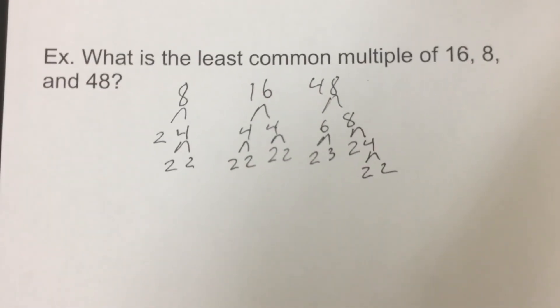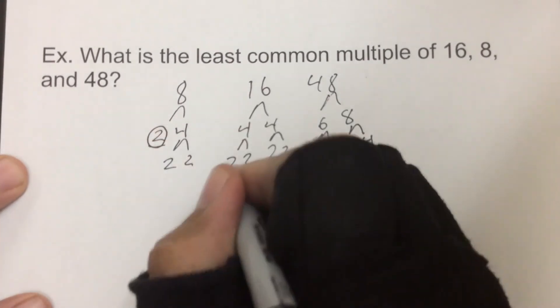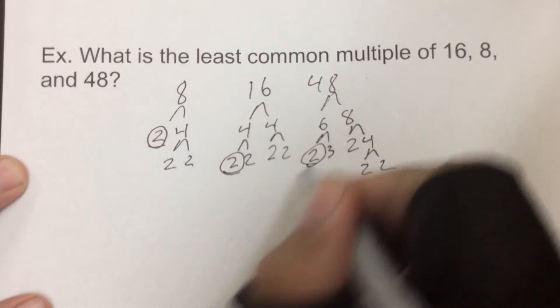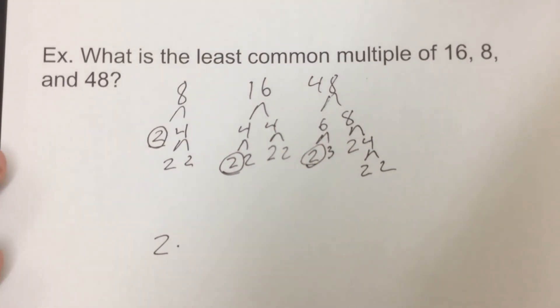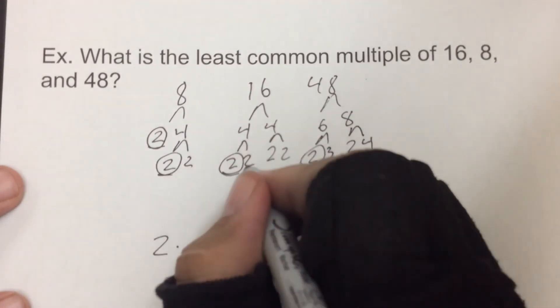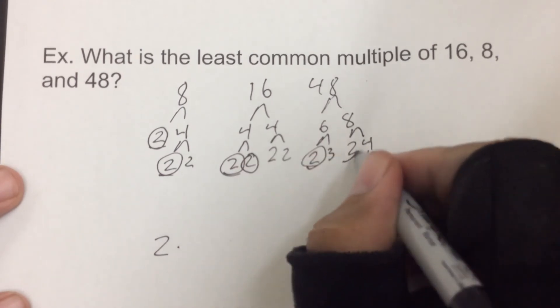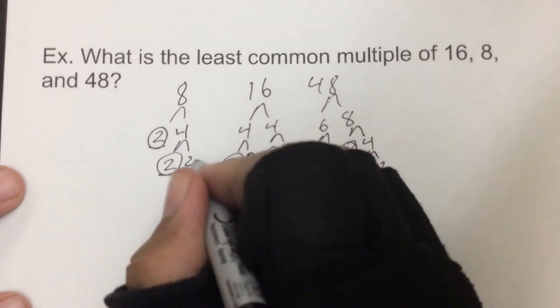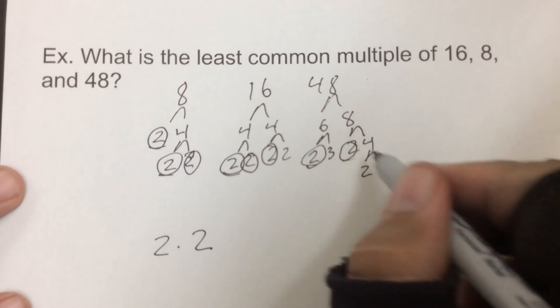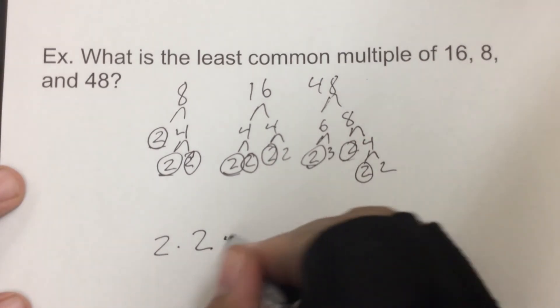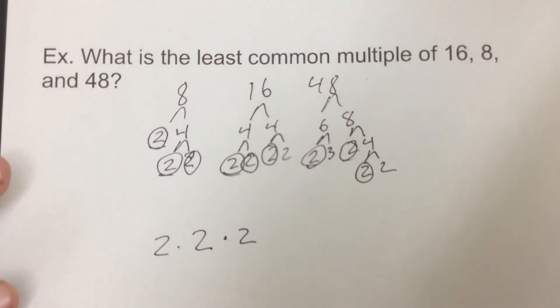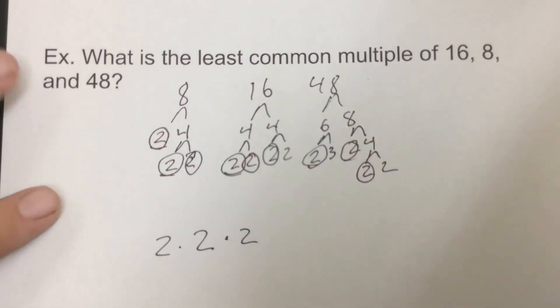So you're going to start off similar to greatest common factor. You're going to look for what do they all have in common. Well, we have a 2, we have a 2, and we have a 2. So we start with a 2. We have a second set of 2's. We have a third set of 2's. So now that covers everything that they all have in common. And 8 even is completely done. There's no factors left.